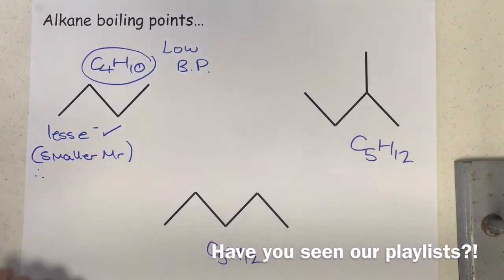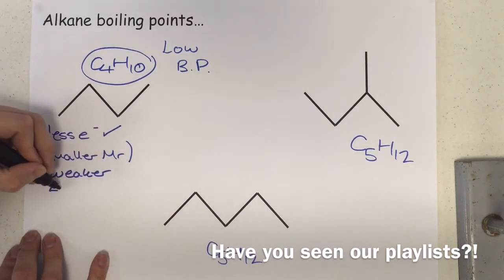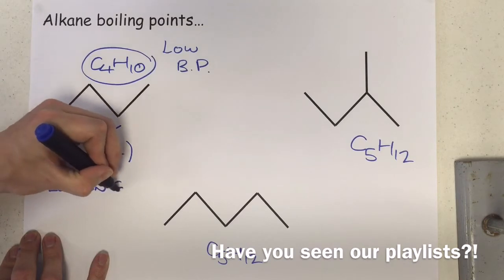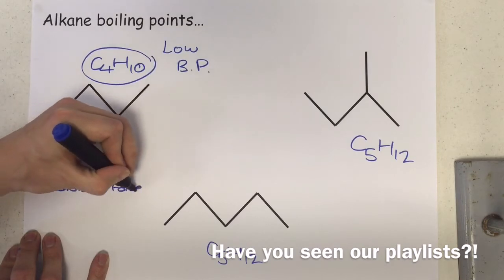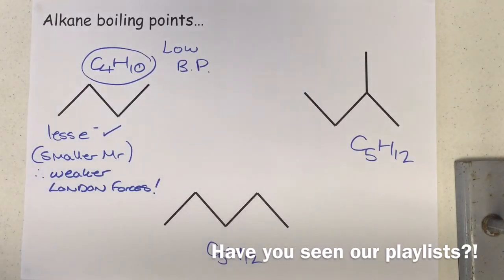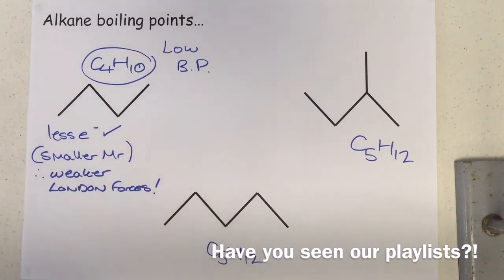What we would see then is an impact of weaker London forces. These used to be called van der Waals, and you still technically can call them that, but we choose to call them London forces at ASFC. Weaker London forces arise since the temporary induced dipole is going to be smaller since there are fewer electrons in the structure.